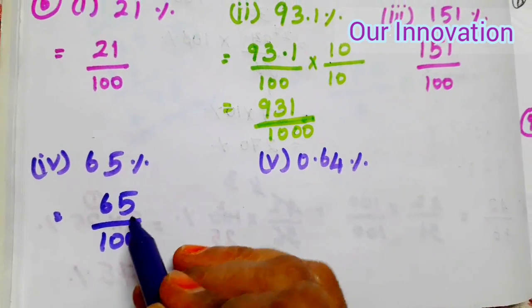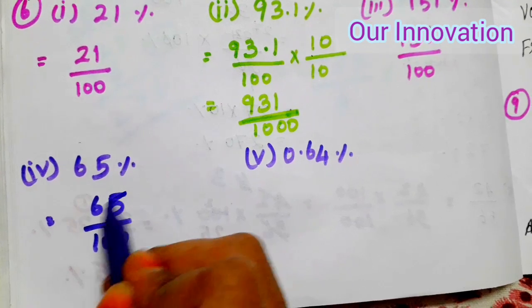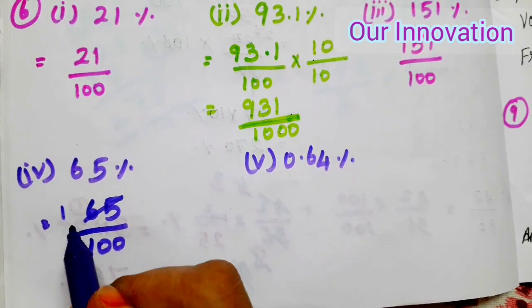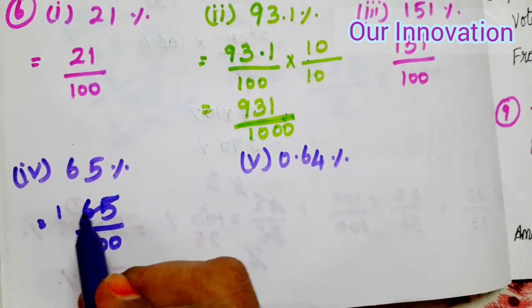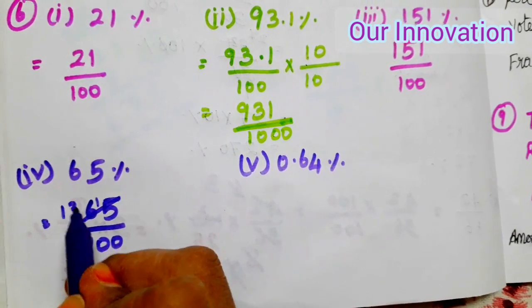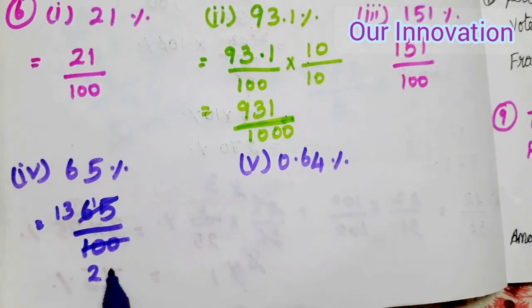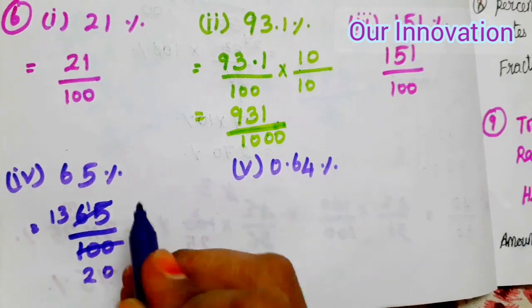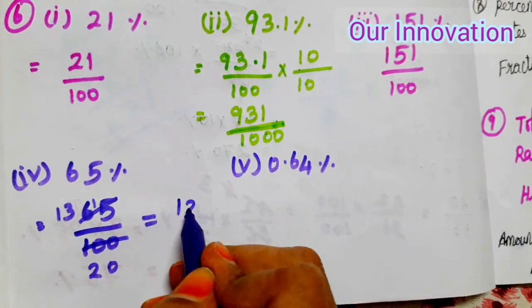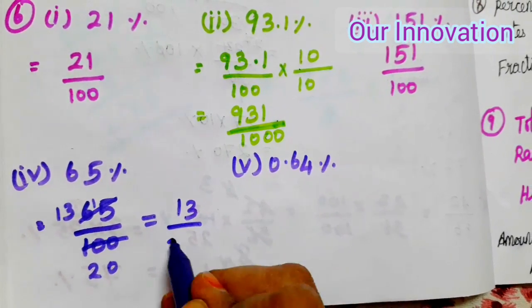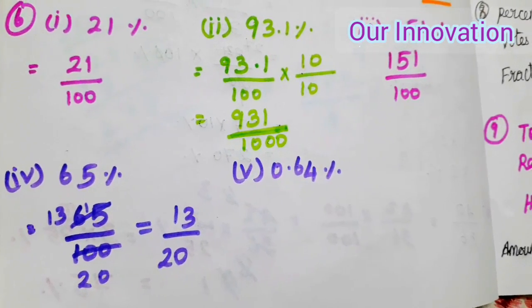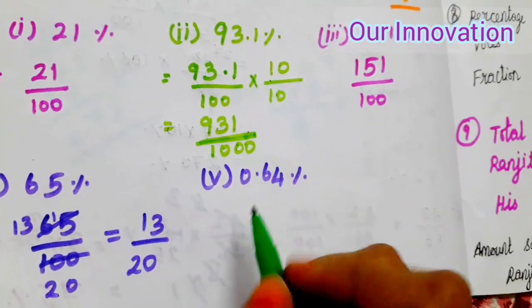Students, cancel: 5 is 5, 6 × 5 = 30, balance 1, 3 × 5 = 15, 2 × 5 = 10, balance 0. After cancelling, the fraction is 13 by 20.